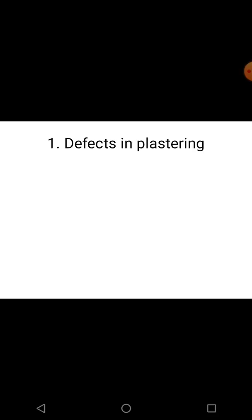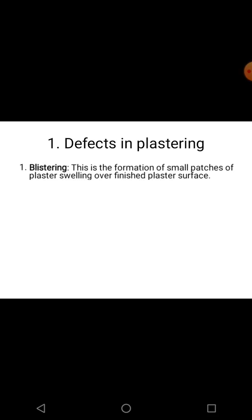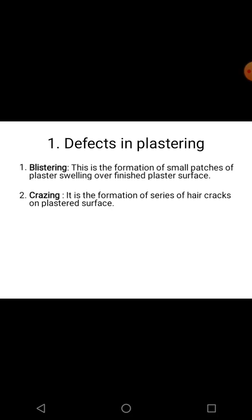Now we will study each defect in detail. The first defect is defect in plastering. There are four types: the first is blistering. Blistering is the formation of small patches where small dots of plaster have been removed from the surface — it is a formation of small patches of plaster swelling over a finished plaster surface.